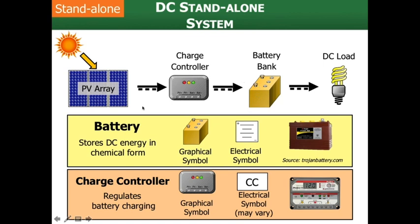We've got two new components to talk about on the screen: a charge controller and a battery bank. Most of us are pretty familiar with batteries — we understand that batteries store direct current energy in chemical form, so it's a form of chemical energy storage. We have a lesson in this class where we talk a lot more about batteries, covering different battery chemistries, how batteries work, how to maintain batteries, and how to size battery banks. In the very simplest terms, a battery or a bank of multiple batteries is going to store and provide our DC energy.